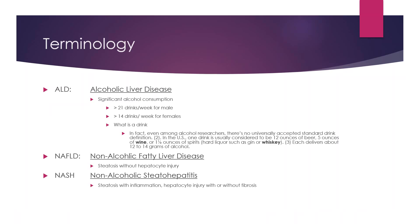I'm going to start out with some education. First, we're going to talk about alcoholic liver disease. Alcoholic liver disease moves to fatty liver disease. How do you get alcoholic liver disease? It is significantly caused by alcohol consumption — if a male drinks more than 21 drinks per week, or if a female drinks more than 14 drinks per week.